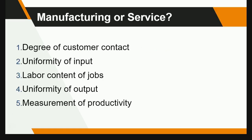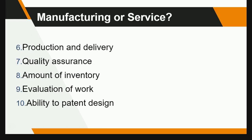Manufacturing versus services. We can see the difference in the degree of customer contact, uniformity of input, labor content of jobs, uniformity of output, measurement of productivity, production and delivery, quality assurance, the amount of inventory. Also, you cannot store services. Evaluation of work and the ability to patent — you cannot patent services.